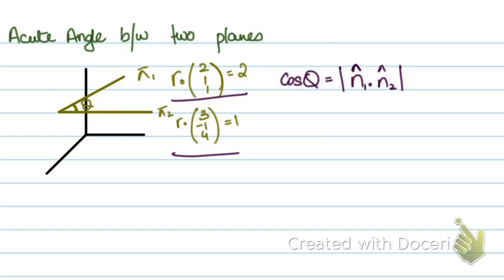So if I solve this, this will be cos θ equals unit vector of the first normal: 2 over root 6, 1 over root 6, and again 1 over root 6.